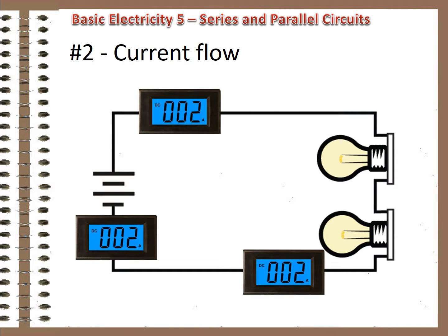Rule number two. No matter where you measure it, current flow is the same in a series circuit. If two amps leave the current source, then two amps are flowing everywhere in the circuit, anywhere you measure.